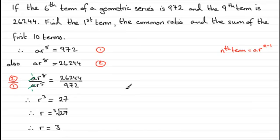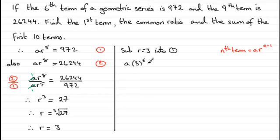We need to get that first term. Well, that's going to be easy now, because all we need to do is substitute r equals 3 into either equation 1 or 2. I'm going to go for equation 1. So if we sub r equals 3 into equation 1, then what we have is a times 3 to the power 5 equals 972. So to get a, all we need to do is divide 972 by 3 to the power 5.